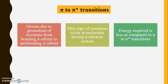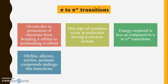The energy required for pi to pi star transitions is less as compared to the n to sigma star transition, placing them third among all four types of transitions. Because less energy is required, they occur at higher wavelength than the n to sigma star transition. Examples of compounds showing pi to pi star transitions include olefins, alkynes, nitriles, and aromatic compounds — all compounds with double or triple bonds.